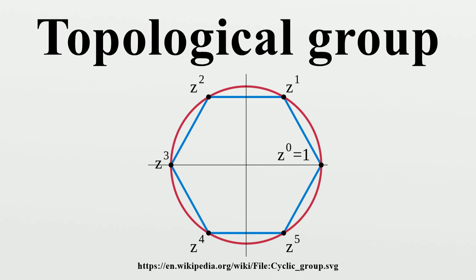is a topological space when given the quotient topology. One can show that the quotient map Q: G to G/H is always open.